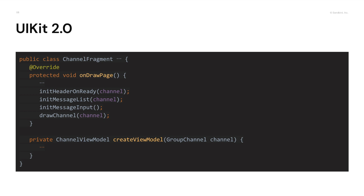Let's look at the code. The header, list, data, and event binding for the input are all combined within the fragment's onCreateView method, so the customer is not able to customize them separately. In addition, the creation of ViewModel was set to private, making it impossible to manage APIs.